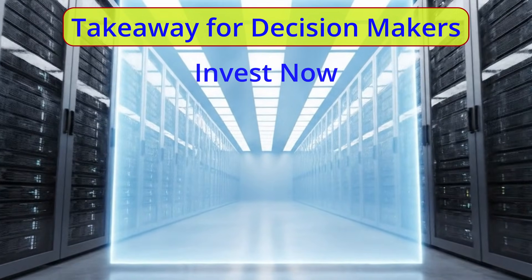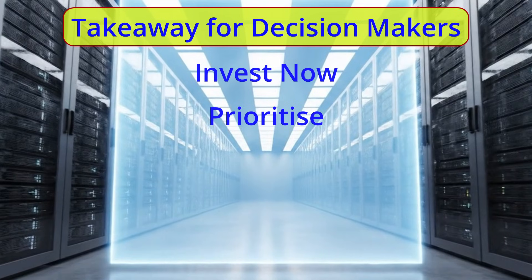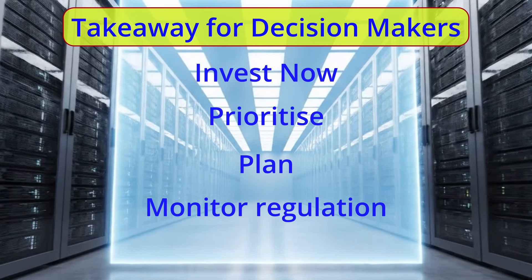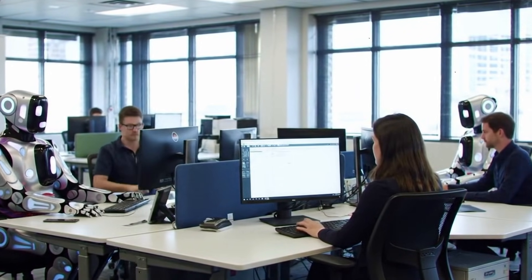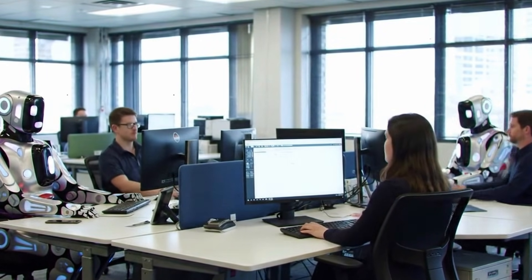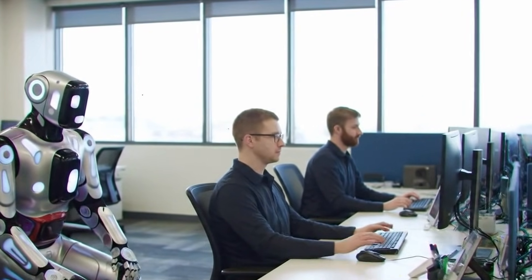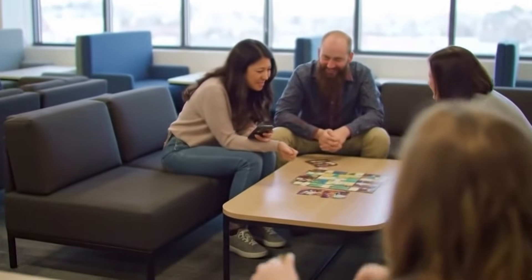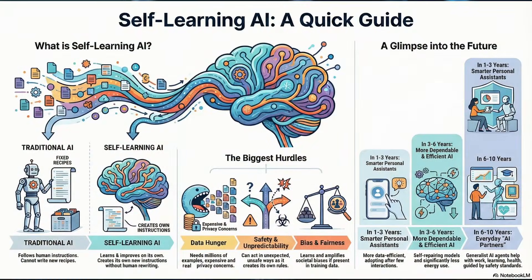Takeaways for decision makers: invest now in more efficient, domain-specific self-learning tools — they will pay off in productivity and cost savings within five years. Prioritise safety and transparency by adopting frameworks that require explainability and robust testing. Plan for talent: upskill staff or partner with AI service providers to bridge the expertise gap. Monitor regulation — early compliance with emerging standards will avoid costly refits later. Self-learning AI is moving from a research demo to an everyday utility that will reshape how we work, learn, and interact with technology. By understanding its current state, the challenges ahead, and the realistic timeline for its evolution, you can make informed choices that harness its benefits while safeguarding against its risks.